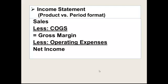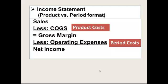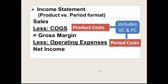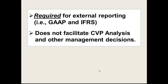Gross margin minus operating expenses gives you net operating income. This is the product-period format: product costs go into cost of goods sold and period costs go below the gross margin as operating expenses. The problem with this method, according to managers, is that product costs include both variable and fixed costs, and period costs also include both. Cost behavior has a major impact on profits, so managers aren't as happy with it — but it is required for external reporting under GAAP and international standards. It does not facilitate management decisions such as CVP analysis.